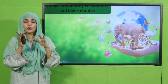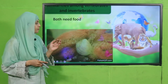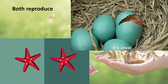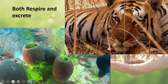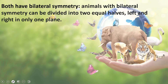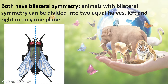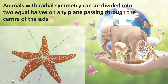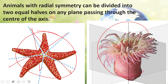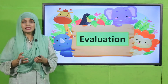A quick recap of similarities among vertebrates and invertebrates: both need food, both can move from one place to another, both can reproduce, both can excrete waste products, and both respire. Both have bilateral symmetry — animals with bilateral symmetry can be divided into equal left and right halves in one plane. Some invertebrates, such as sea anemones, also have radial symmetry.